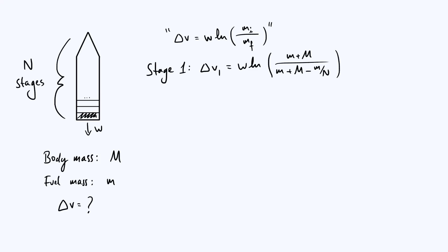We'll go through a similar process for the second and third stages, then generalize to find stage i, and add everything together. The important thing to note is that after we've burnt all the fuel of a particular stage, we discard the solid mass left over. We detach it with zero relative velocity so it doesn't affect the momentum of the main body. This already tells you conceptually why splitting a rocket into stages is a good idea: you're discarding whatever mass you don't need as early as possible, so the same total energy goes only into the part of the rocket you care about accelerating.